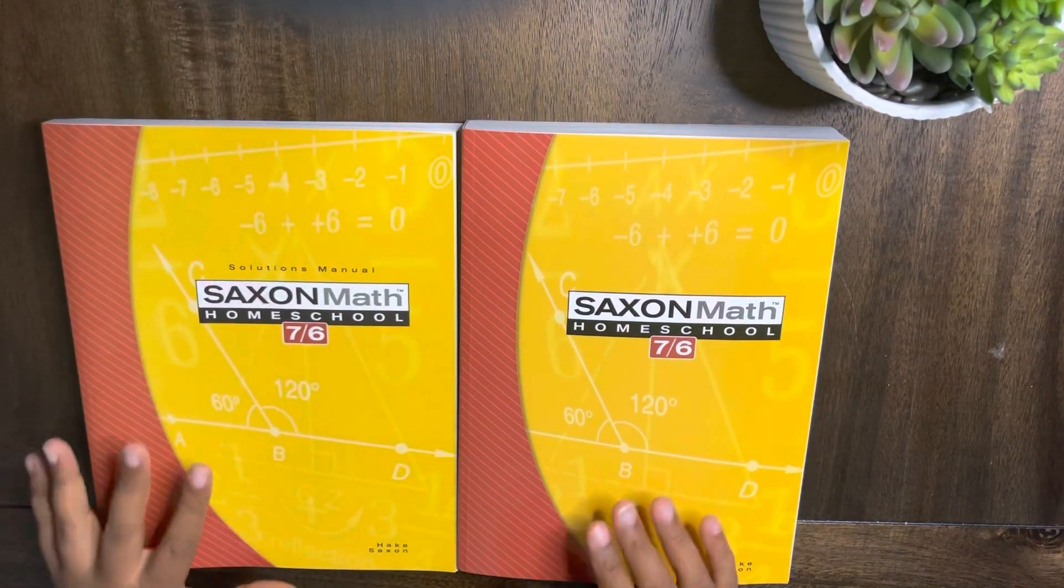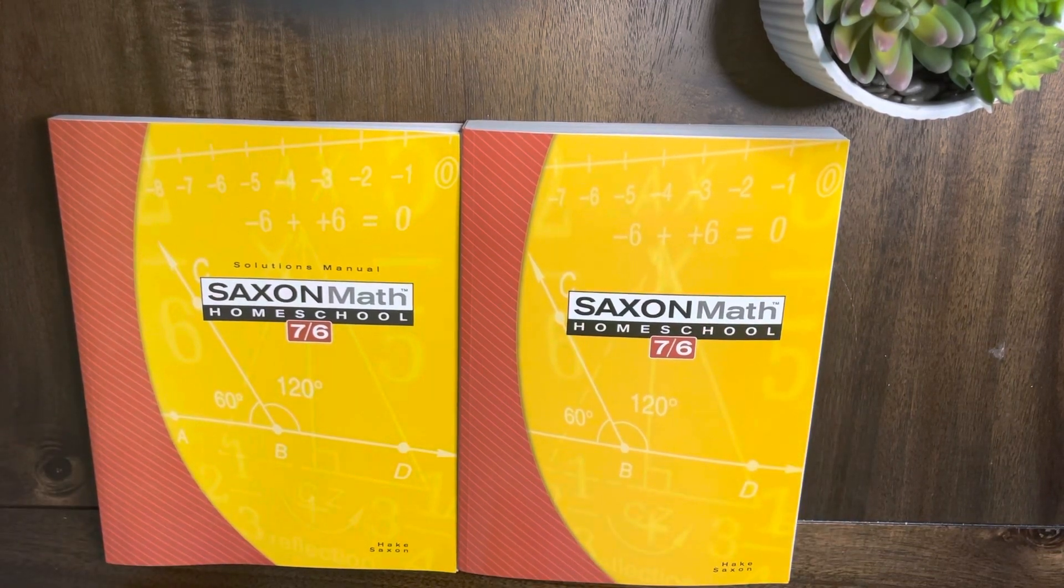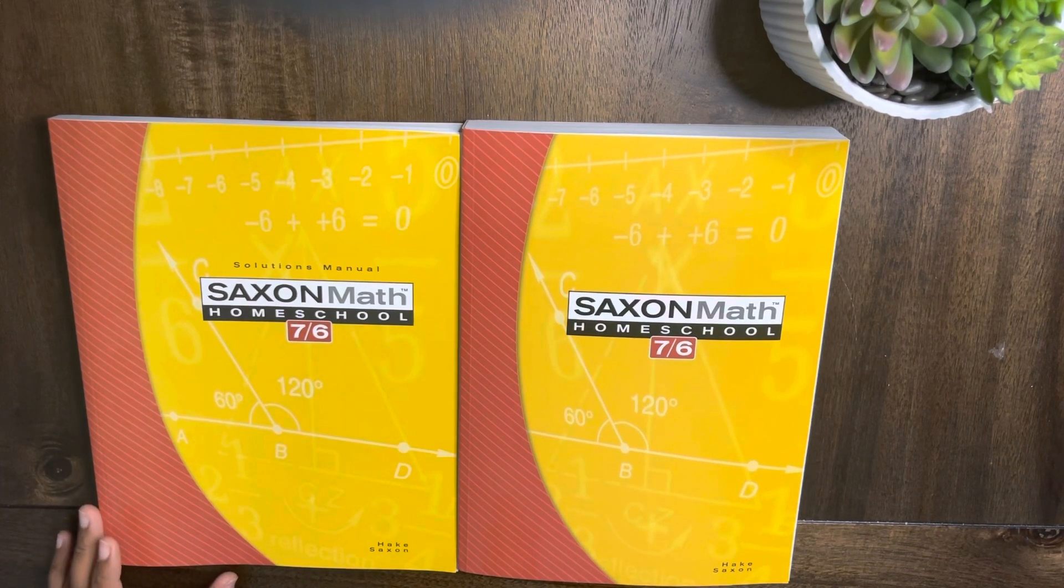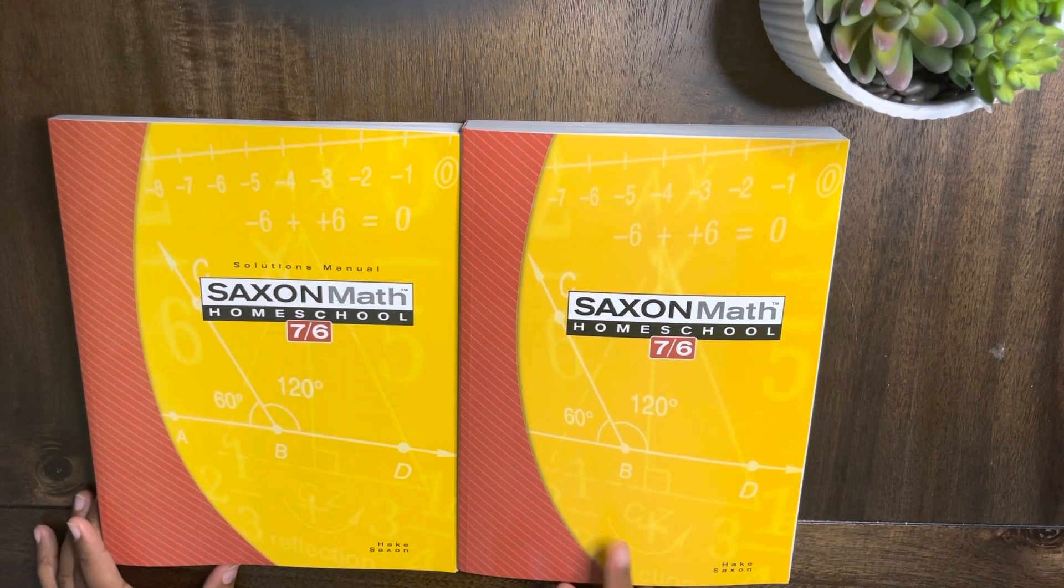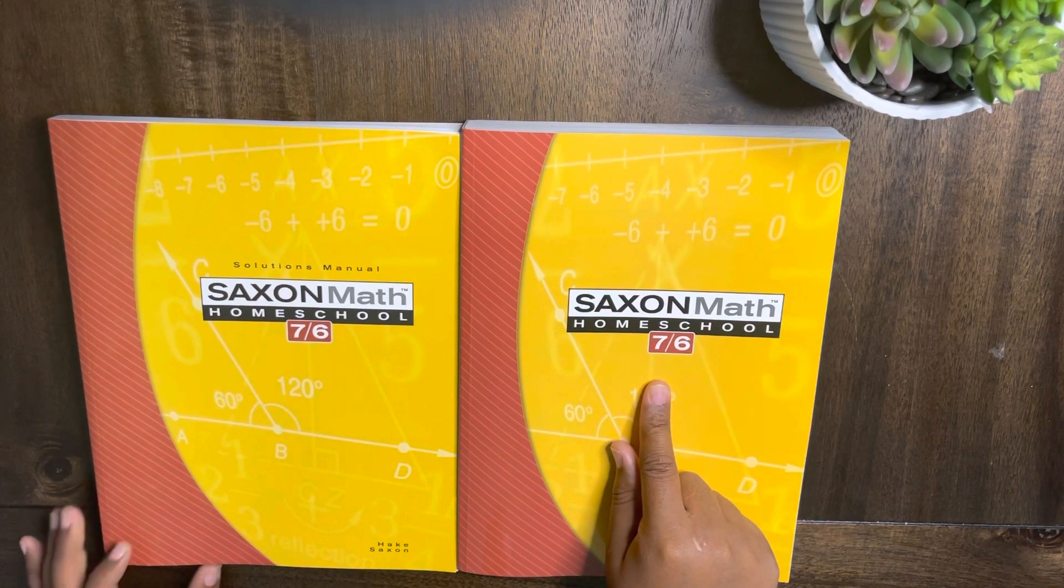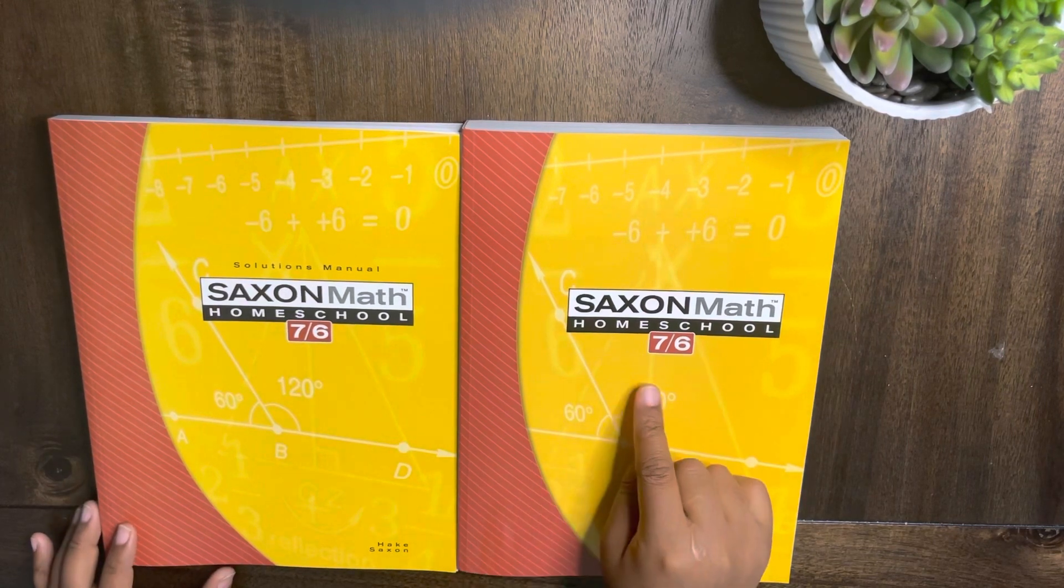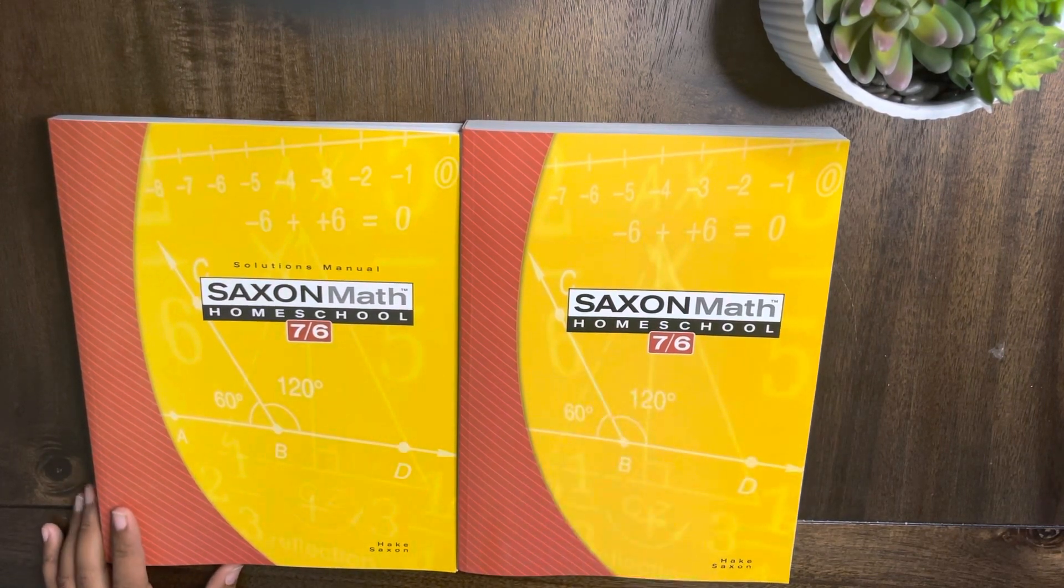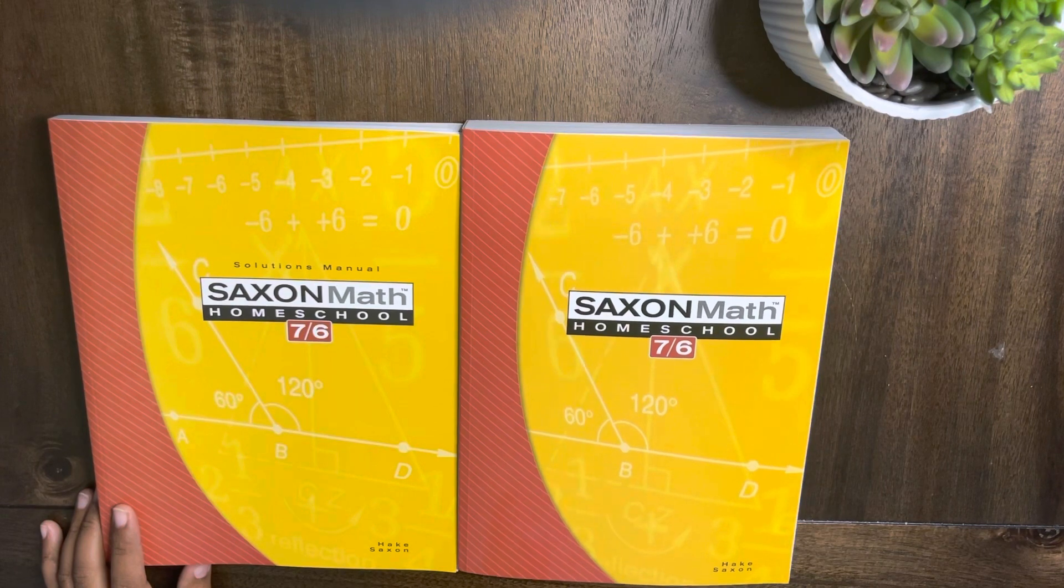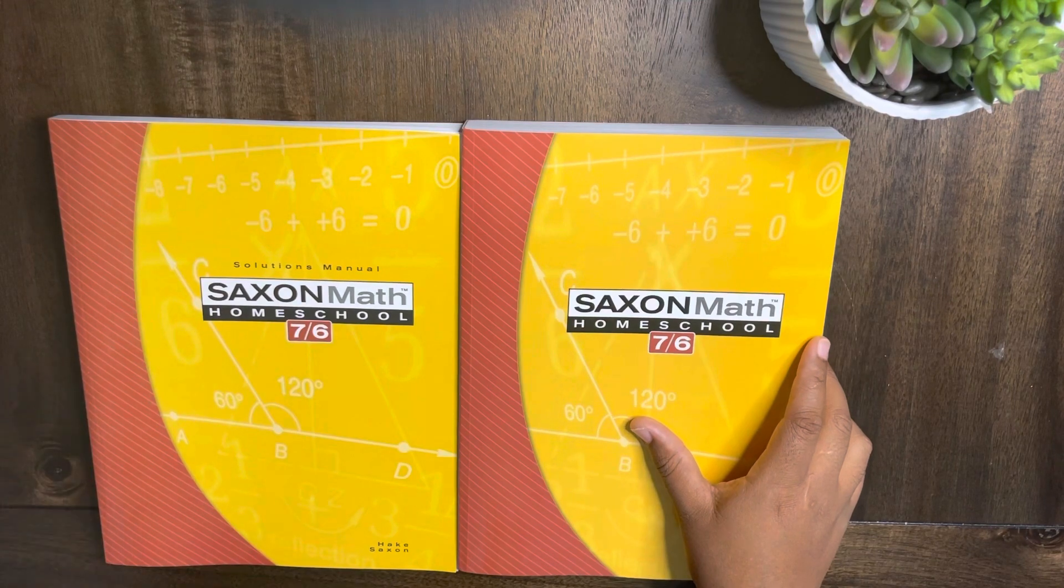Last year I used Master Books and I felt like it did not have enough in it. So if you didn't like this, take a look. Make sure you hit that subscribe button so you don't miss it. This Saxon Math was for seventh - this is for sixth grade, yes, 7/6, this is for sixth grade. Thanks for watching and I will see you next time.